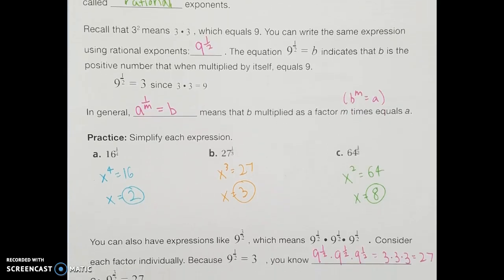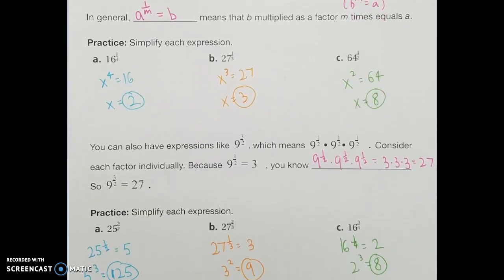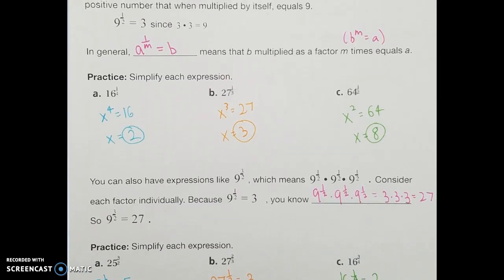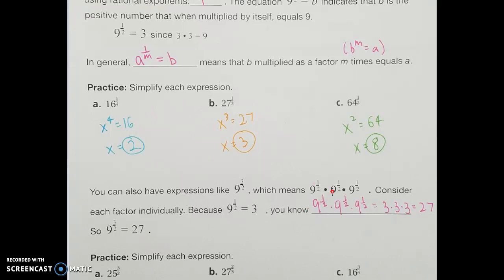We can also have expressions like 9 to the 3 halves, meaning 9 to the 1 half multiplied together 3 times. Since 9 to the 1 half is 3, that expression becomes 3 times 3 times 3. Adding 1 half plus 1 half plus 1 half gives 3 over 2, confirming 9 to the 3 halves equals 27.